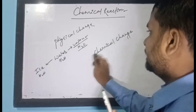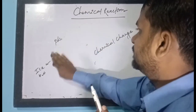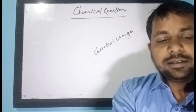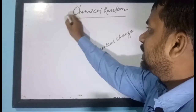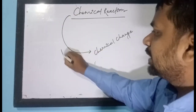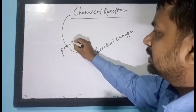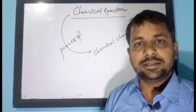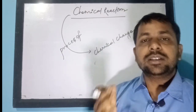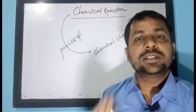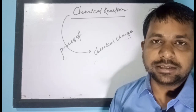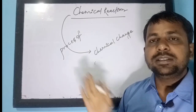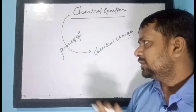What is a chemical reaction? A chemical reaction is a process of chemical change. If any chemical change is occurring, that process is called a chemical reaction. This chemical change can occur in different ways.